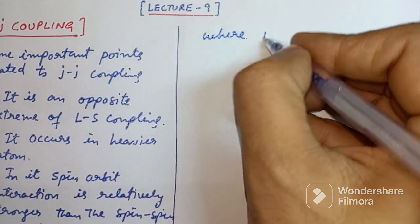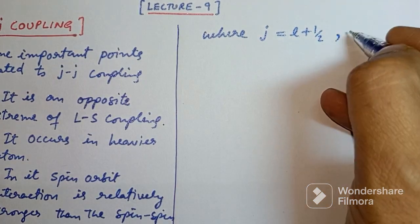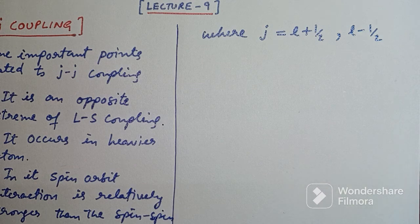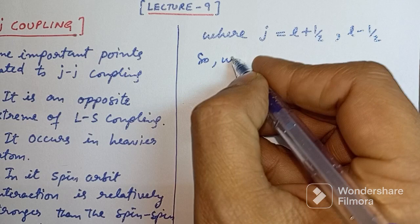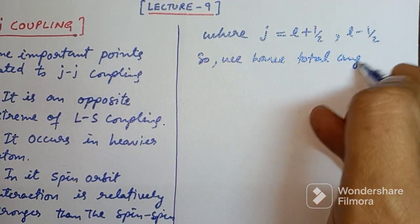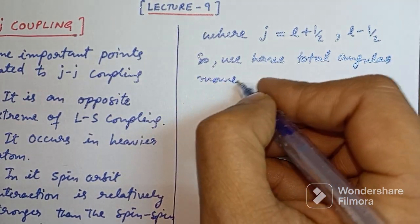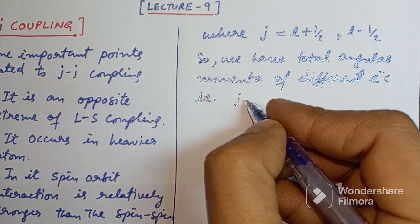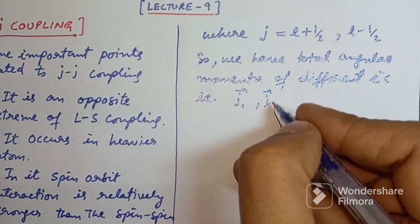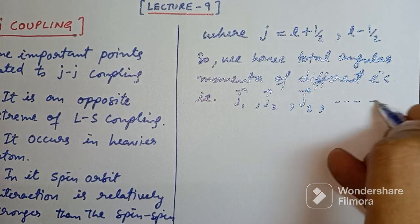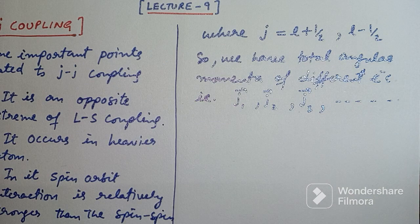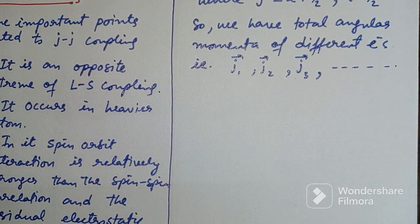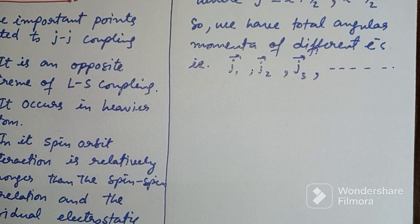The value of J can be L + 1/2 or L − 1/2, because the spin has values of +1/2 and −1/2. So we obtain total angular momenta for different electrons: J₁ for the first electron, J₂ for the second, J₃ for the third, and so on. This completes step number 1, where the spin and orbital angular momentum of each individual electron combine to form a resultant momentum.